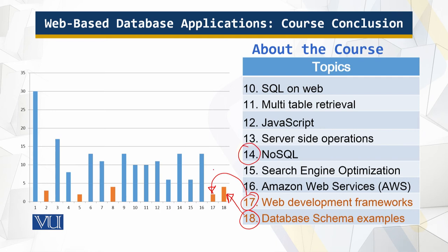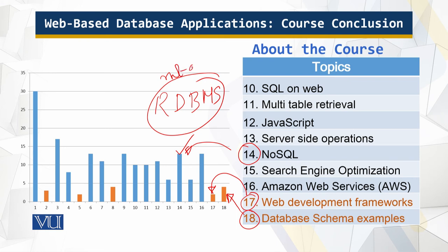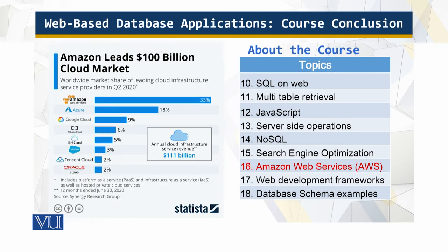I have spent a lot of time on NoSQL also, because there are many applications for which the relational database management system is not a good choice — as a matter of fact it doesn't work at all. That is why we have NoSQL. I have also spent a lot of time on Amazon Web Services. This is a hundred billion dollar market — that is why I have spent so many modules on AWS, so that you are aware of what is out there in the market for your benefit.